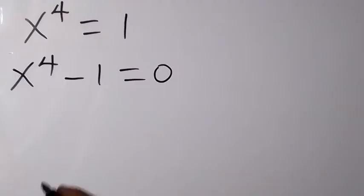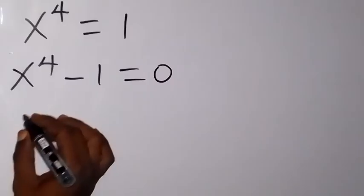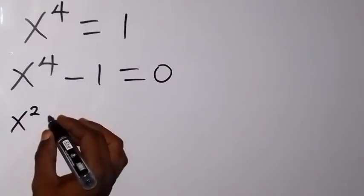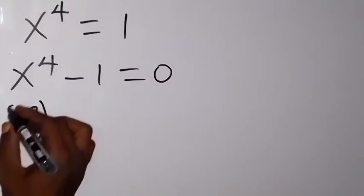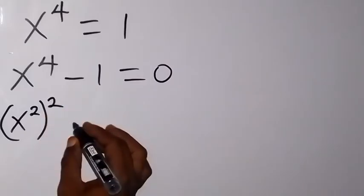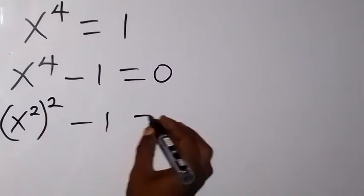Then from here, let's write this x raised to the power 4 another way, and say this is x raised to the power 2, then all raised to the power 2 minus 1. It will be equal to 0.